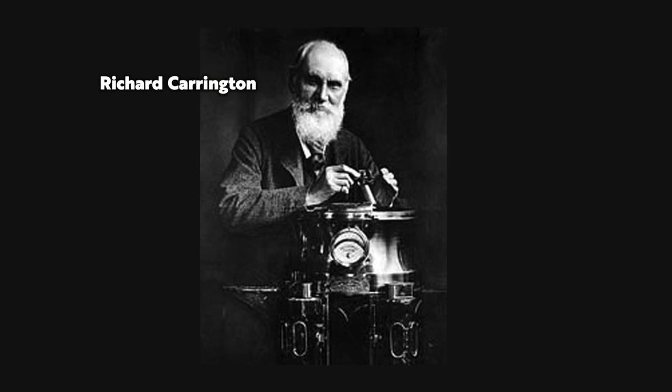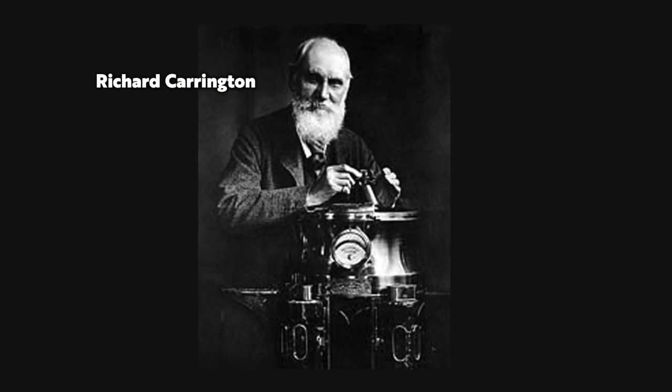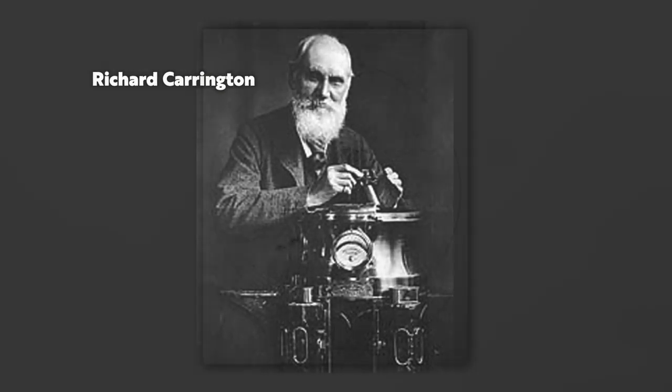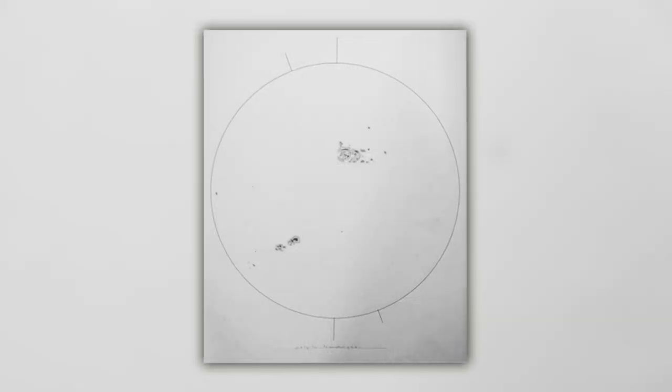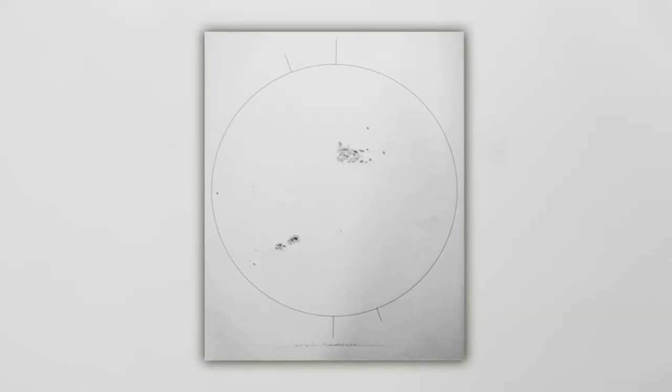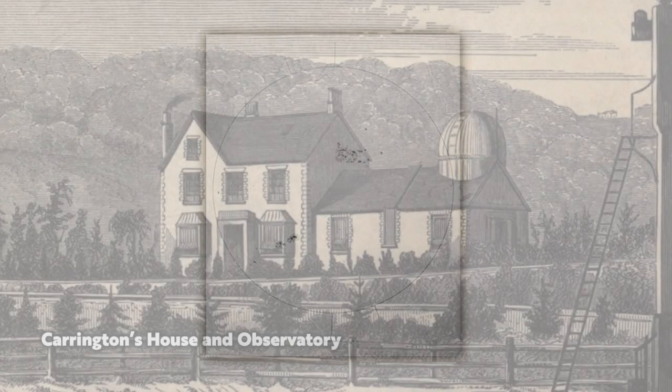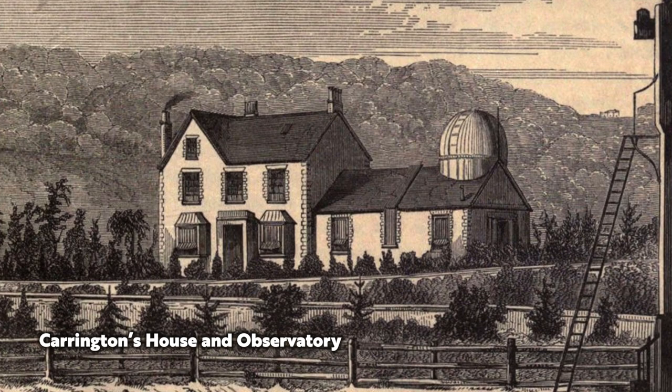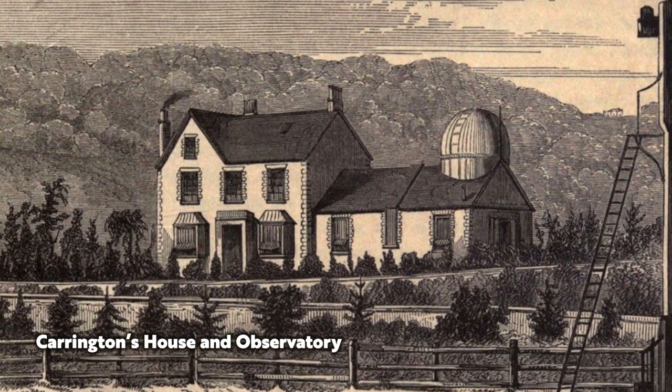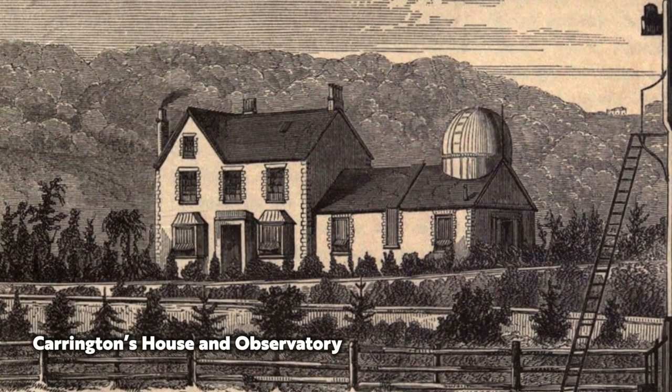On Thursday, September 1st, 1859, Richard Carrington projected an image of the sun's disk through his telescope onto a plate of glass with distemper of a pale straw color. He recorded his observations, drawing diagrams of all the sunspots, whether grouped or detached.